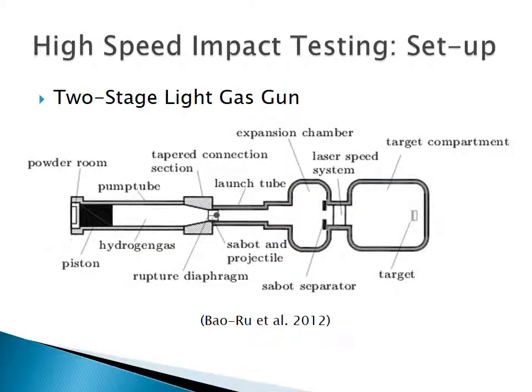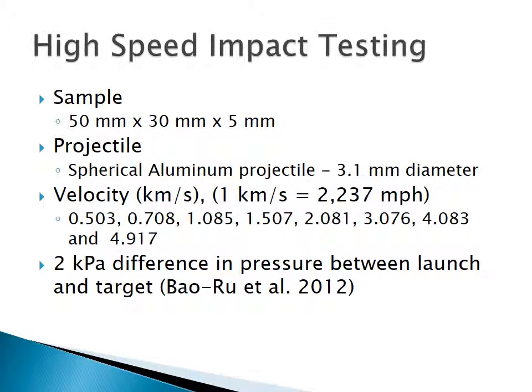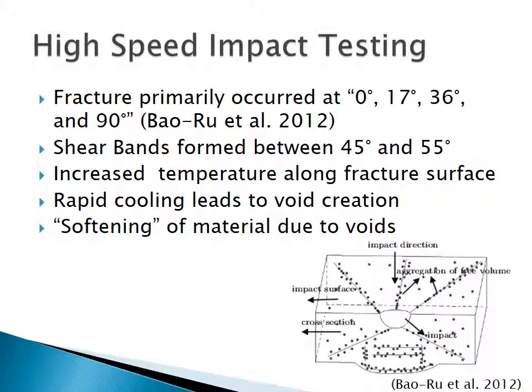A visual representation of a two-stage light gas gun is provided. Pressurized hydrogen gas is forced to rupture a ruptured diaphragm, which in turn projects the aluminum projectile at the bulk metallic glass target. Speed information is monitored by the laser speed system. To conduct high-speed impact testing, a sample measuring 50 millimeters by 30 millimeters by 5 millimeters was impacted by a 3.1 millimeter diameter spherical aluminum projectile. Impact velocities range from 0.503 to 4.917 kilometers per second — one kilometer per second equaling over 2,000 miles per hour. A model of the impact site is provided for clarity.